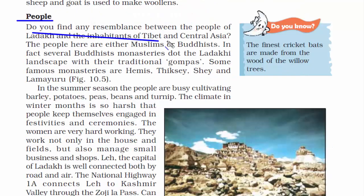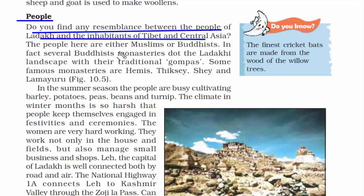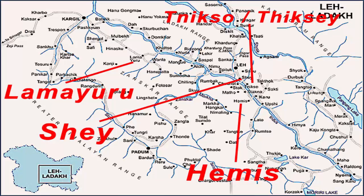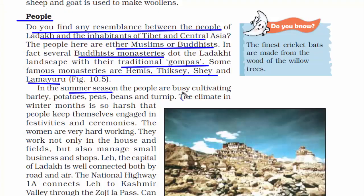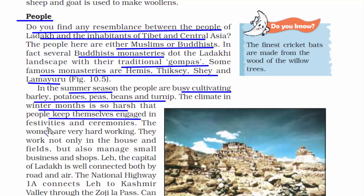The people of Ladakh show some resemblance to the people of Tibet and Central Asia. They are either Muslims or Buddhists, and Ladakh has many Buddhist monasteries, also called traditional Gompas. Some of the famous monasteries are Hemis, Thikse, Shey and Lamayuru. During the summer season, people cultivate barley, potatoes, peas, beans and turnip, as the warmth provides the moisture needed for farming. During the winter months, the climate is so harsh that people keep themselves engaged in festivities and ceremonies.